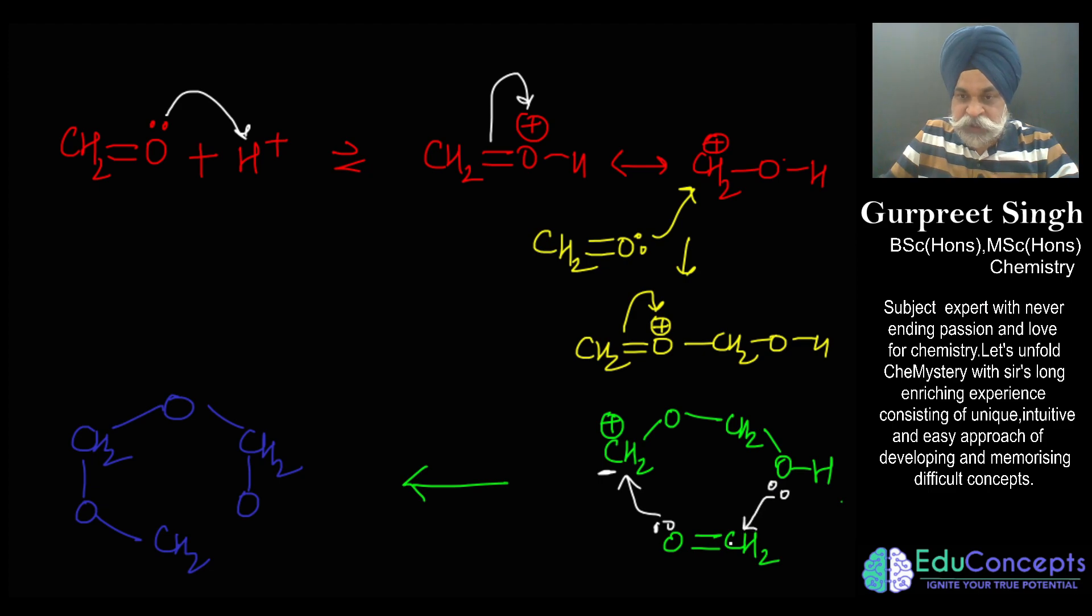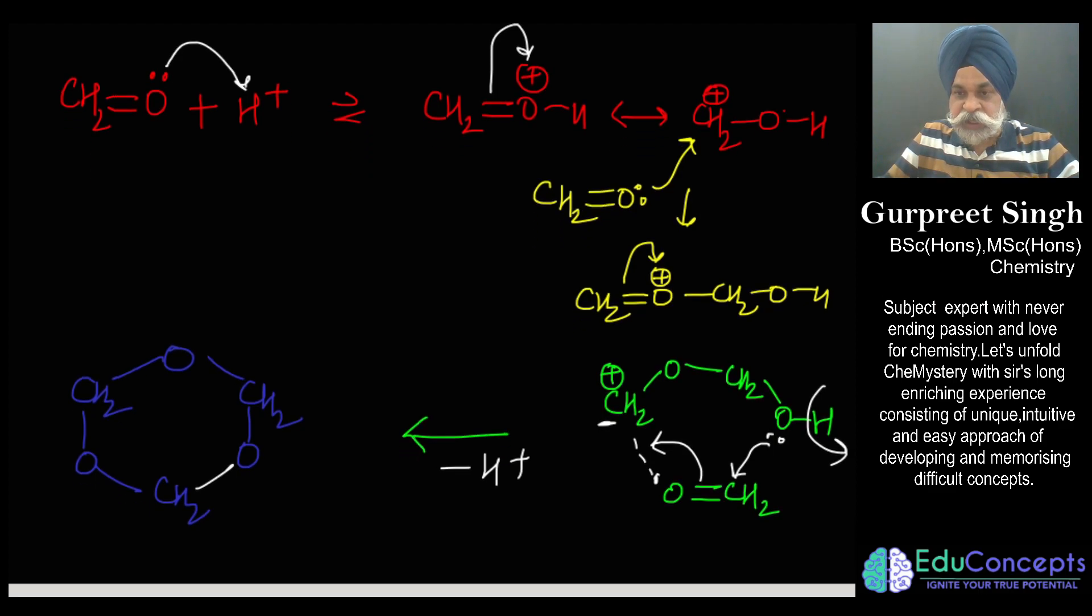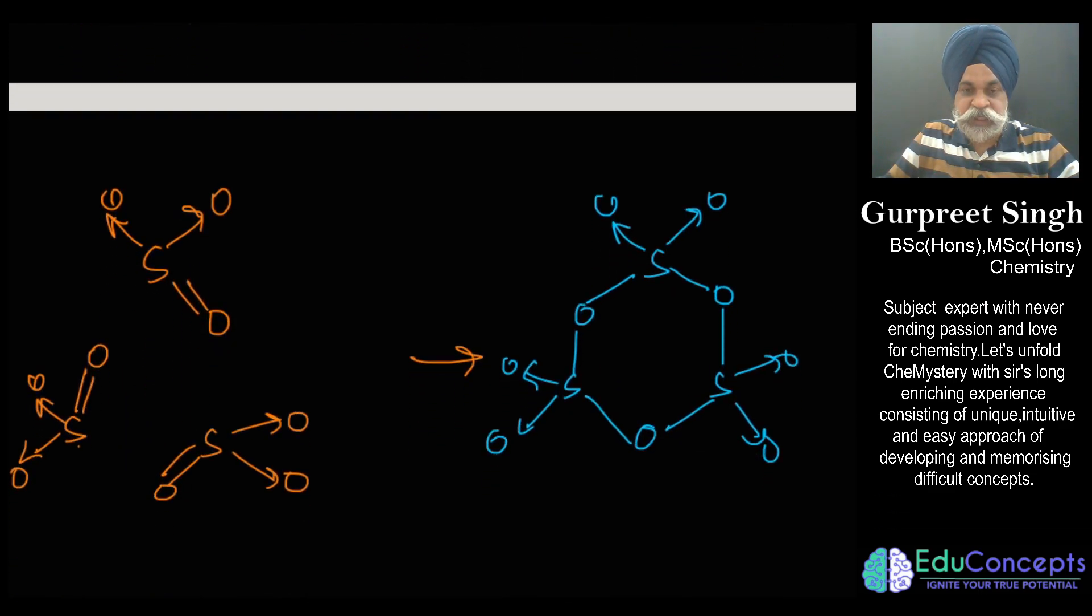So you may take it like this also, that you can simply say the lone pair attacks here and this would go here, and this H positive loses out. So ultimately you end up getting the same compound, that is what you call trioxane. Another thing is SO3.